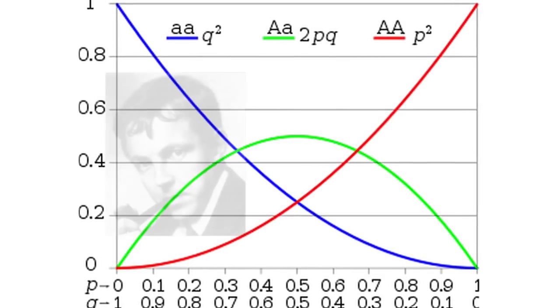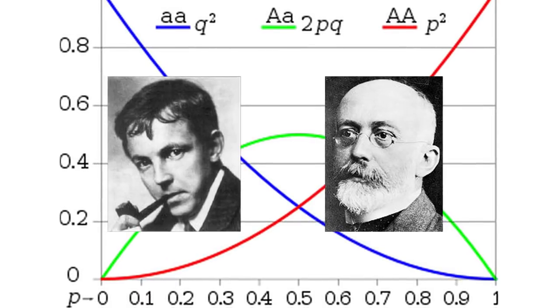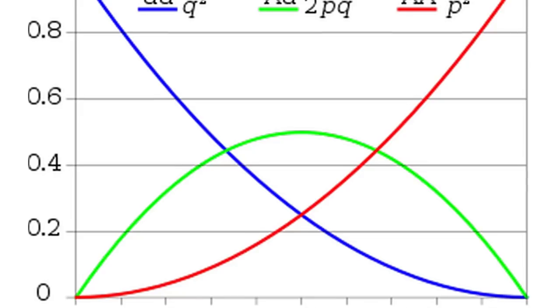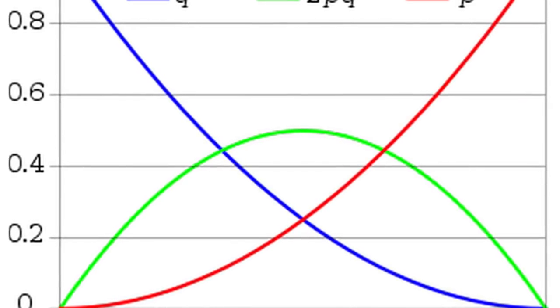In 1908, Godfrey Hardy in England and Wilhelm Weinberg in Germany both independently published papers outlining the same mathematical principle, eventually known as the Hardy-Weinberg principle.